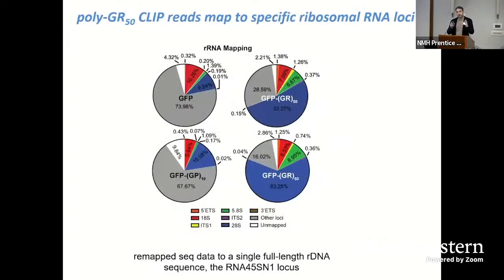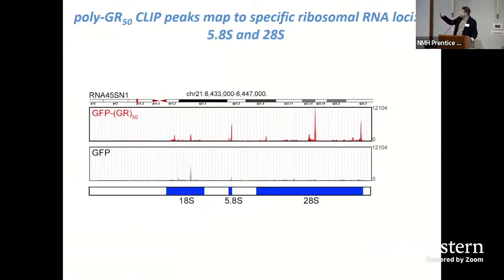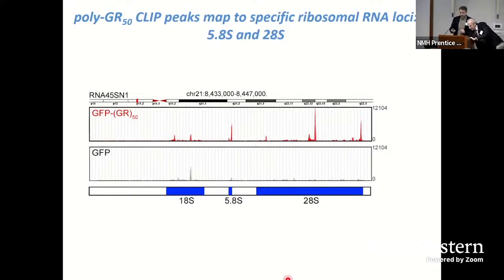To get a better understanding of what types of ribosomal RNAs polyGR was able to bind, we remapped the sequencing data to a single full-length cDNA sequence. Two independent CLIP-seq experiments for GFP-GR50 are shown alongside controls, and the CLIP reads map to specific ribosomal RNA loci. The overwhelming signal we found corresponds to 20S, which is a type of precursor ribosomal RNA. We also identified a highly specific 28S peak in GFP-GR50 tracks that was absent from the GFP control.